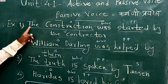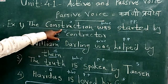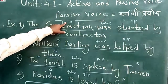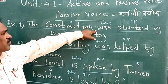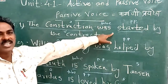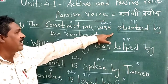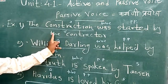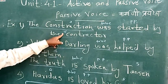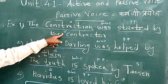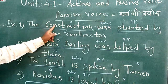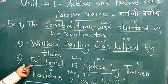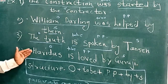The structure for passive voice is: Object + to be + Past Participle + by + Subject. The construction of the passive follows this standard structure, where the object is taken and rearranged according to the passive voice formula.